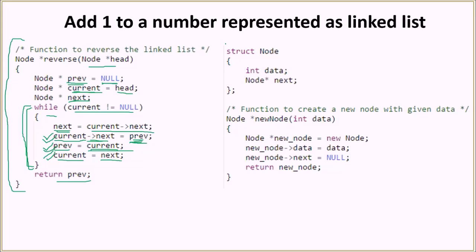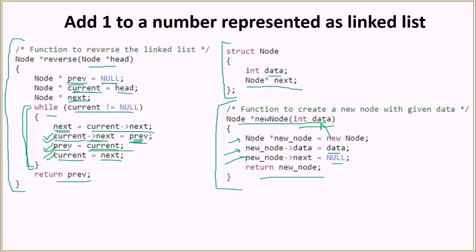The linked list node structure has int data and a node* next pointer. The newNode function creates a new node: we pass the data, create the node, set its data to the passed argument, set its next pointer to null, and return the node.